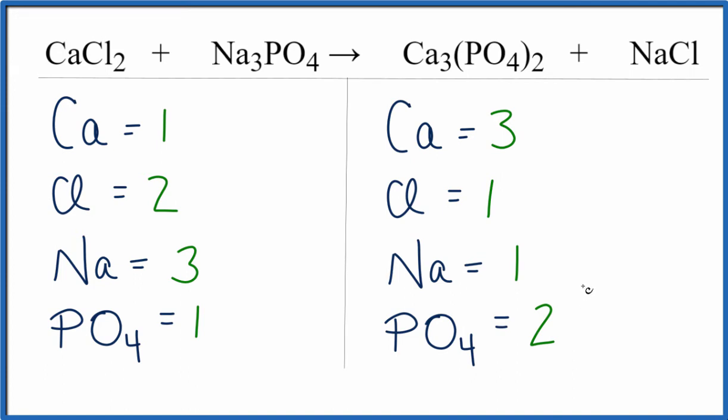This is going to make it a lot easier to balance for us most of the time. I think first I see the calciums, they're unbalanced. One times three, that'll give me three of the calciums. Those are balanced. And then two times three, that'll give me six chlorines.